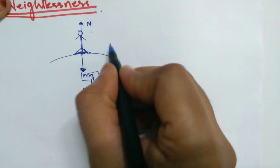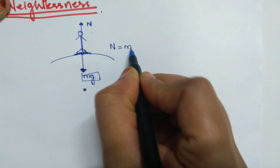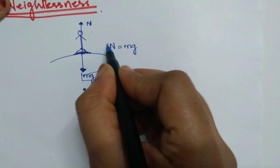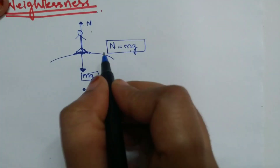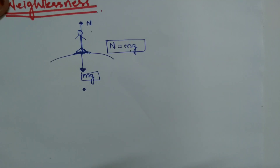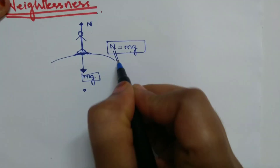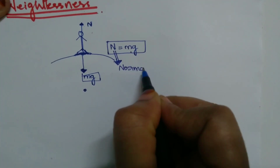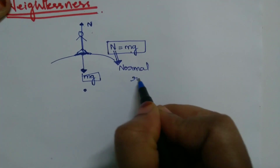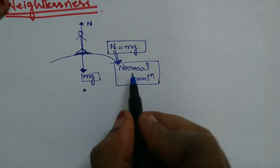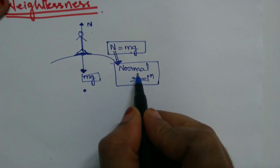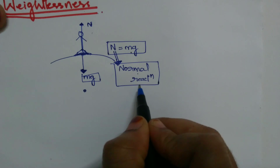Because of that, the normal reaction and the force due to the earth will balance out each other, and you will experience your weight. You experience your weight mainly because of normal reaction. When there is a normal reaction, then only you will feel your weight. Note down this point: when there is a normal reaction, then only you feel your weight.